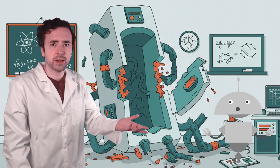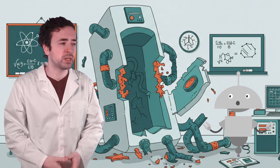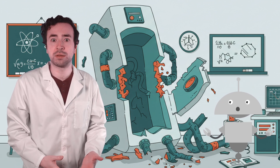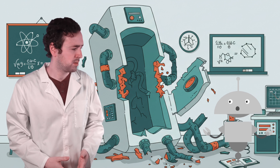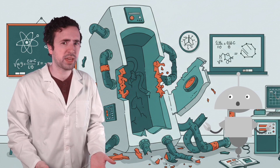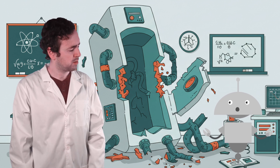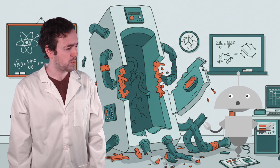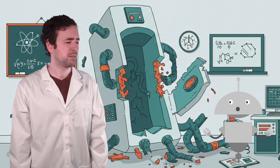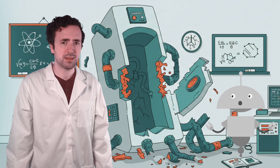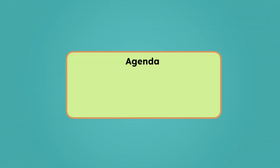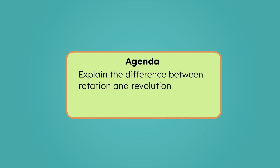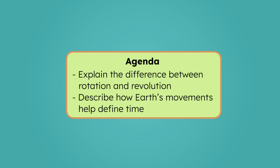Well, think about it. We could relive our favorite memories, go back and fix embarrassing moments. What do you mean we can't control time? We can only measure time passing? But how do we do that? By the end of today's lesson, you'll be able to explain Earth's rotation and revolution, and how they affect our measurement of time. Let's investigate!